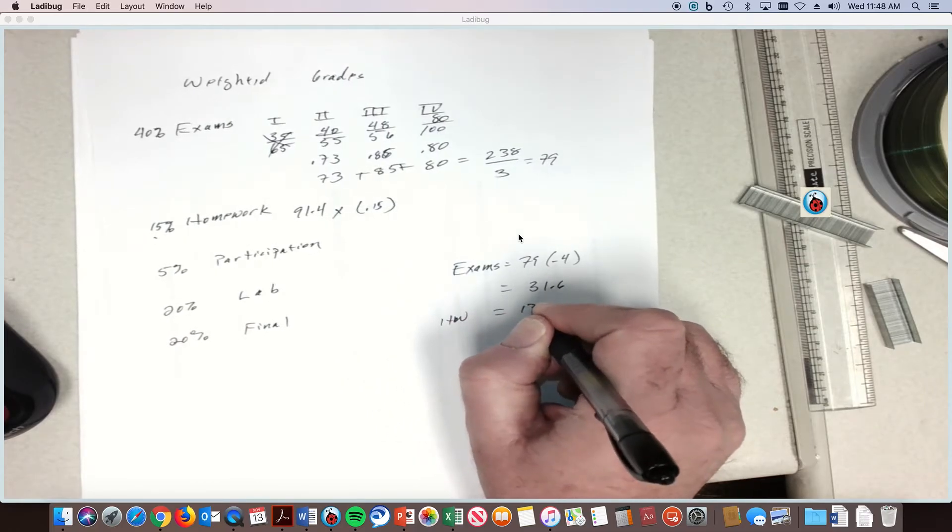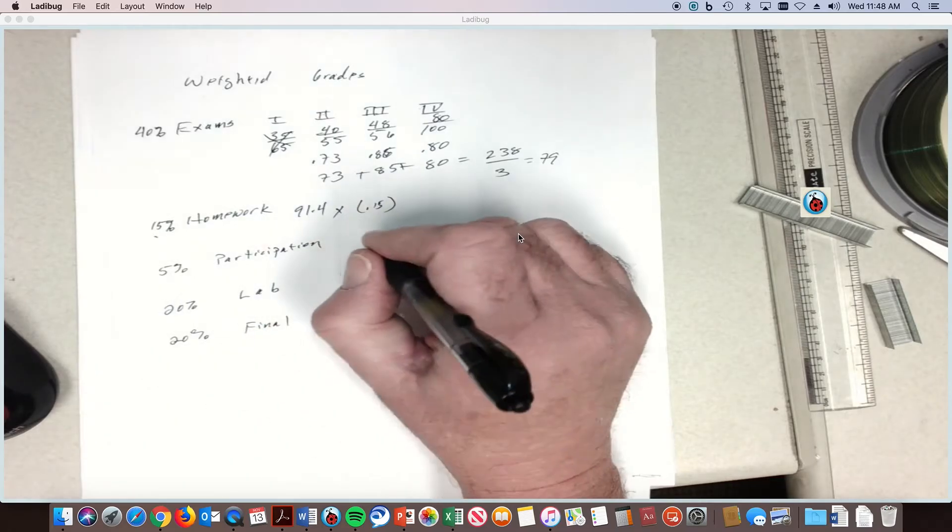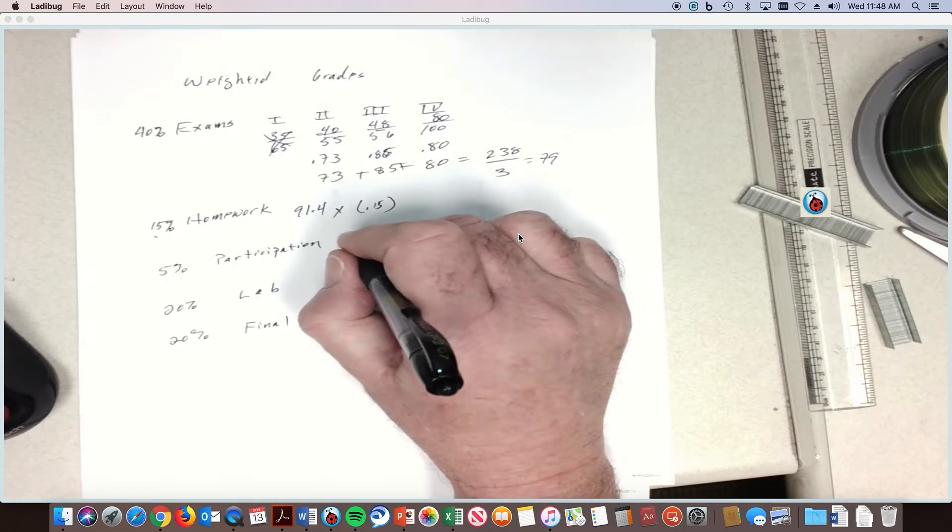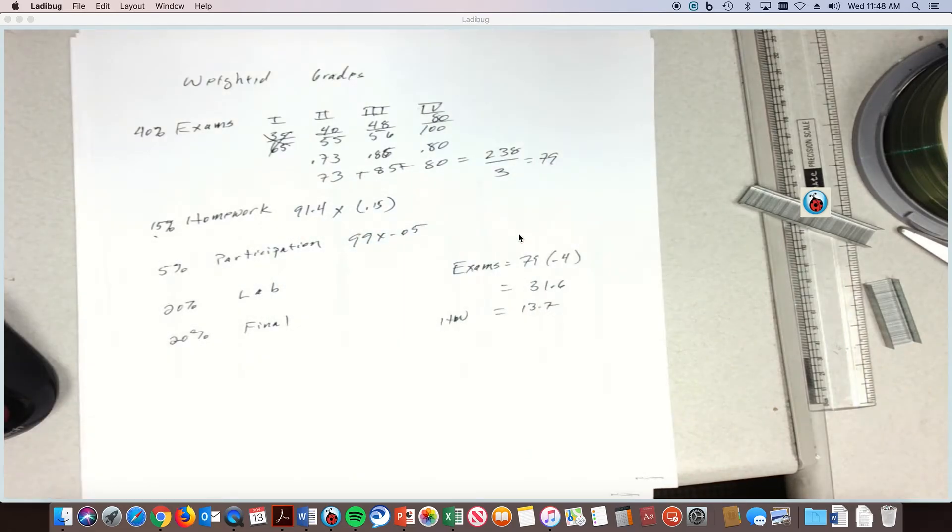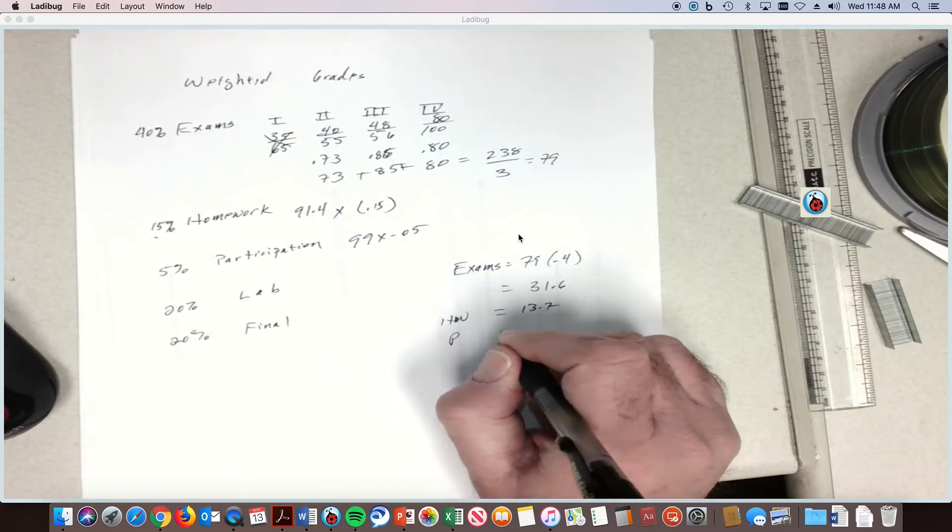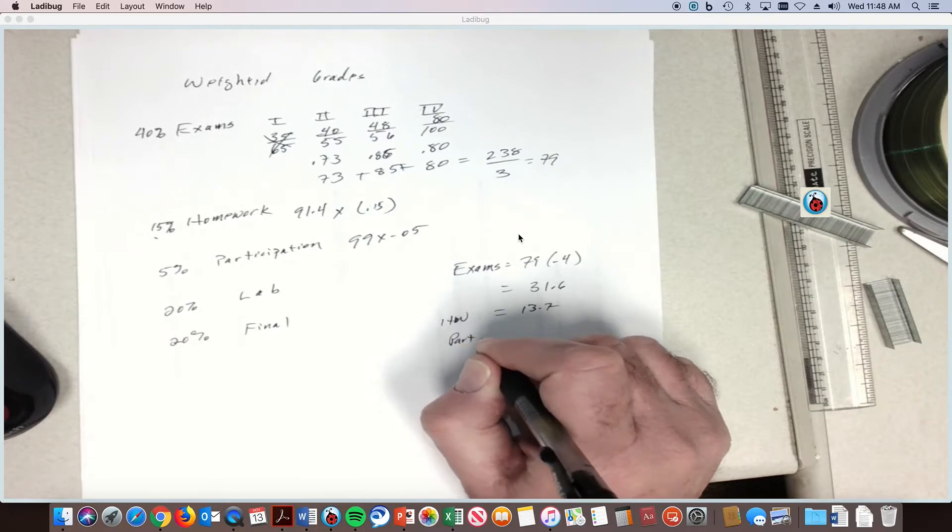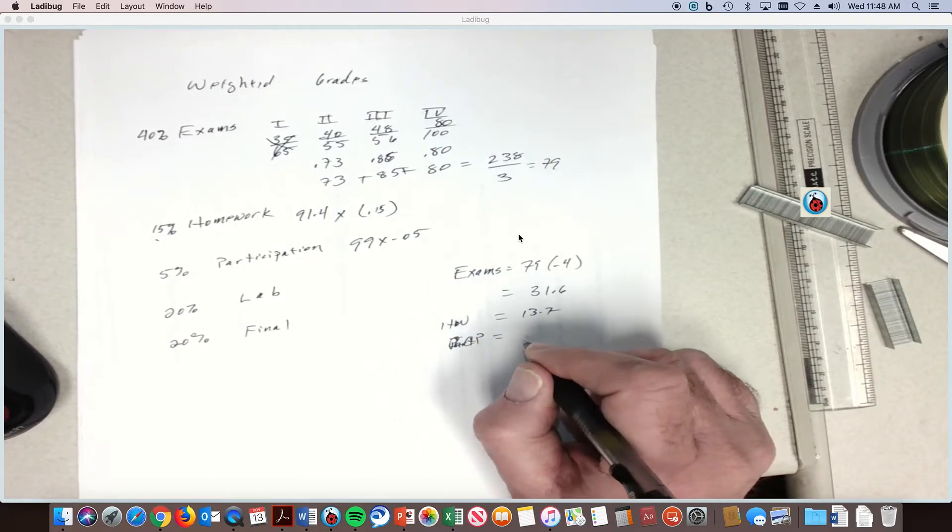Participation - let's just go with 99 on that. So you take 99 times 0.05, that's 4.95 percent participation, daily quiz or ICP is what we called it, 4.95 percent.